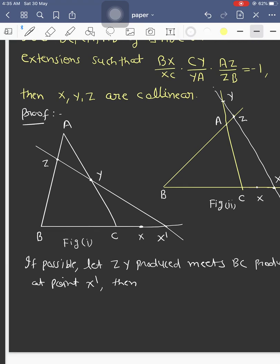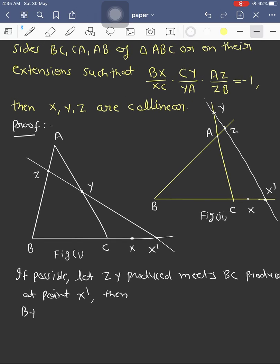Then by Menelaus theorem, we can write BX'/X'C × CY/YA × AZ/ZB = -1.